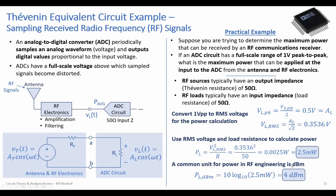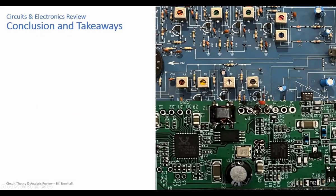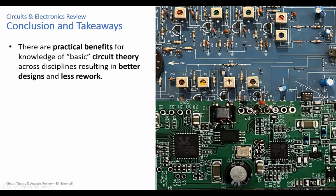This concludes the circuit theory review. We'll get into test equipment material next time. Key takeaways: knowledge of basic circuit theory across disciplines results in better designs and less rework. Knowing about connector engagement can help you avoid problems. If an electrical engineer's decision affects weight — for example, using heavy toroids on a quadcopter — you can suggest alternatives like an air core inductor.